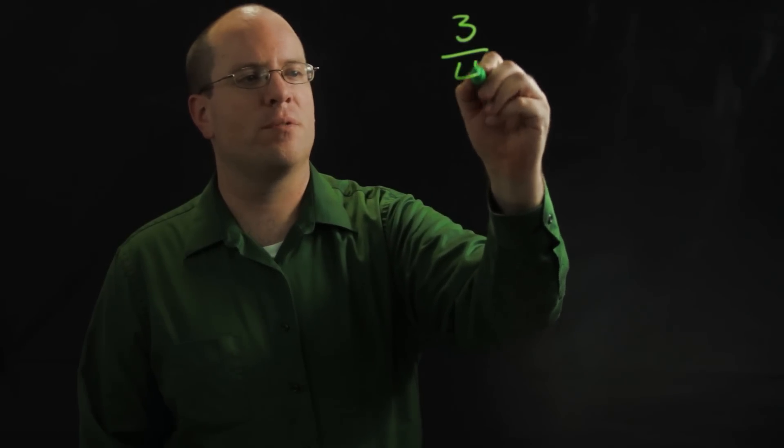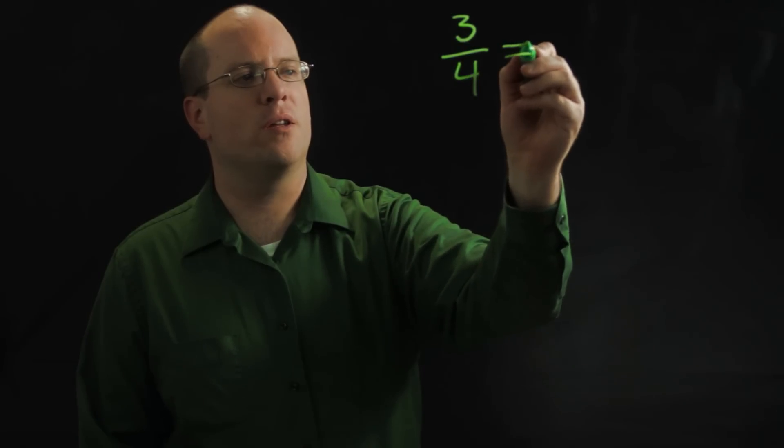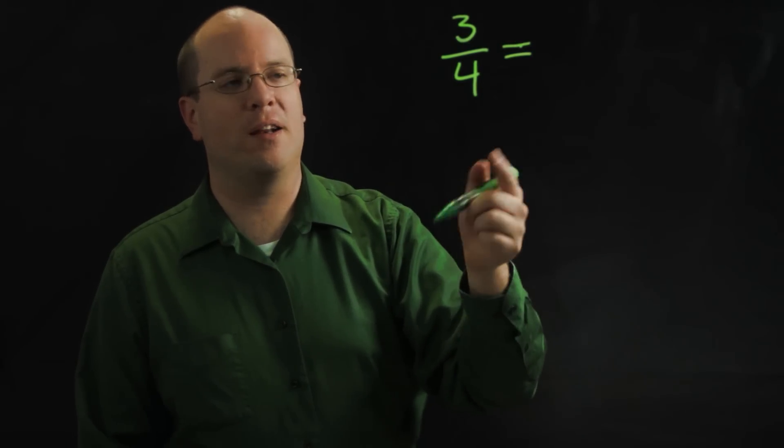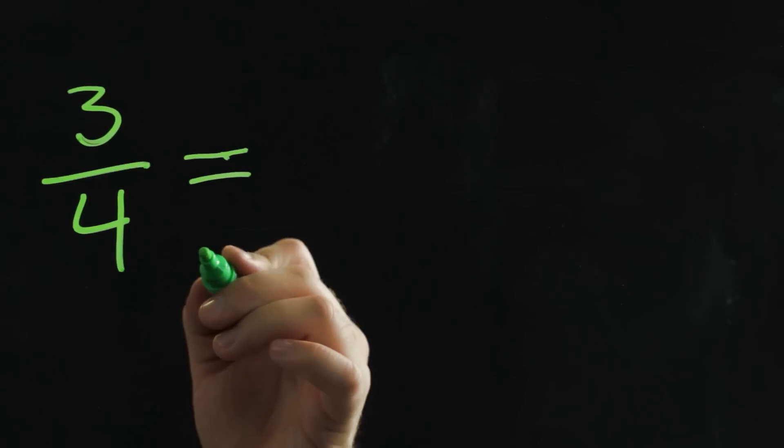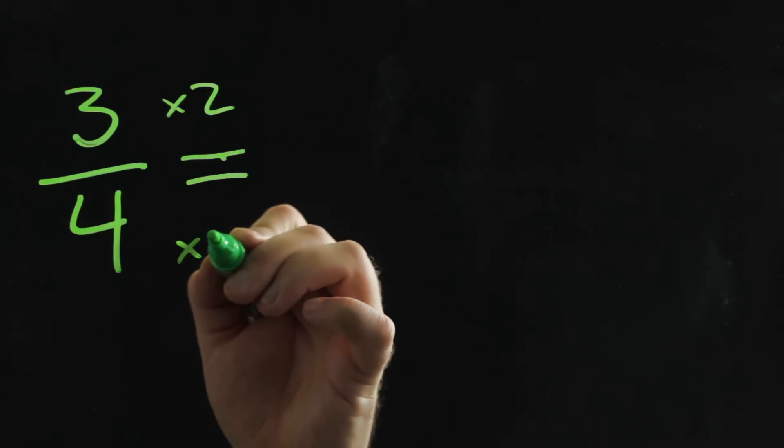Let me use one I haven't used so far, like three-fourths. Now all you have to do is multiply or divide, in this case we're going to multiply both the top and bottom number by the same thing. So let's say I multiply both the top and bottom by two.